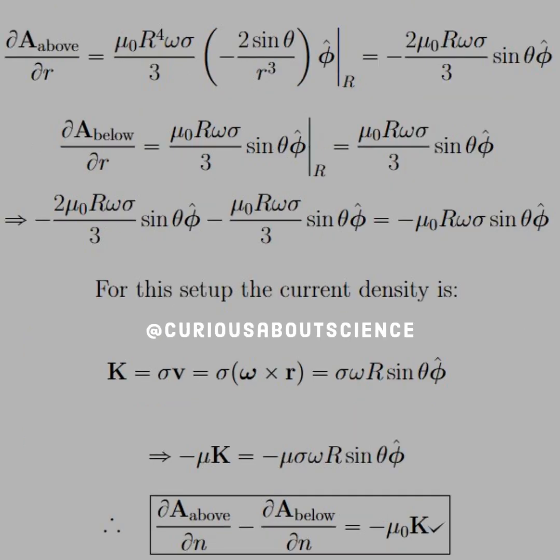Now we've got the messy part where we have to take the normal derivatives. The normal direction for this is in the R direction. Taking the partial derivative of the potential outside the shell, we end up with negative 2 mu naught R omega sigma over 3 sine theta phi-hat. Below, we end up with mu naught R omega sigma over 3 sine theta phi-hat.